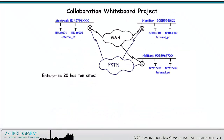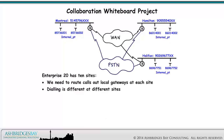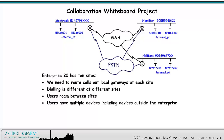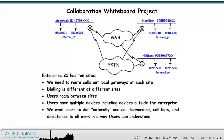Enterprise 20 has 10 sites. We need to route calls out local gateways at each site. Dialing is different at different sites, and users roam between sites. Users have multiple devices, including devices outside the enterprise. We want users to dial naturally and for call forwarding, call lists, and directories to all work in a way users understand. We also want to deploy features like AAR and CFIR.